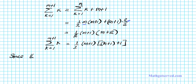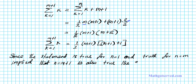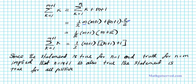Since the statement is true for the base case n equals 1, and truth for an arbitrary n equals m implies that n equals m plus 1 is also true, this automatically means the statement is true for all positive integers. That concludes our proof.